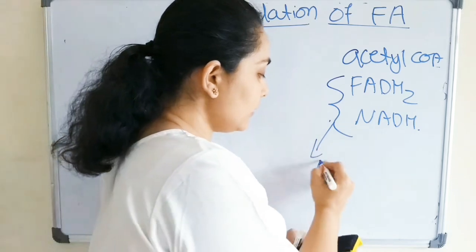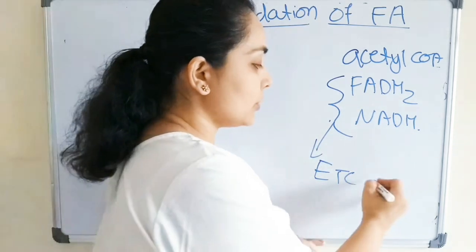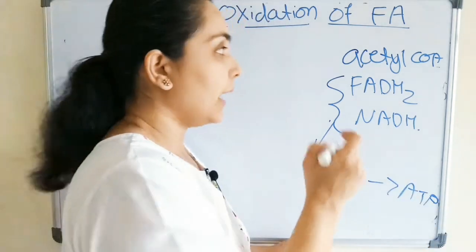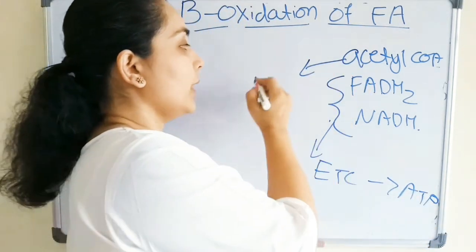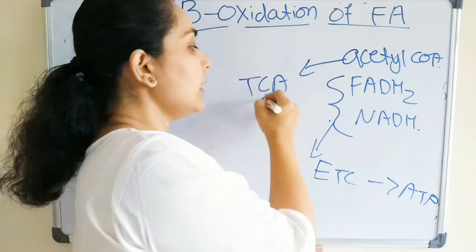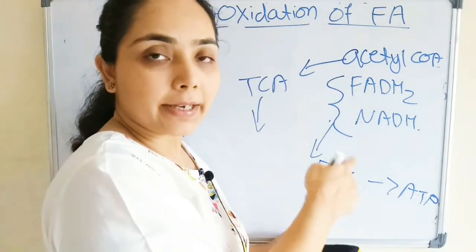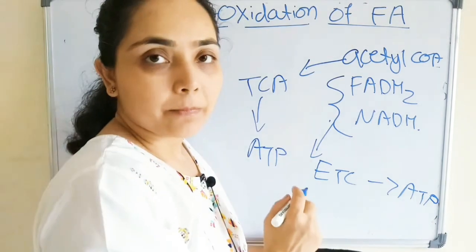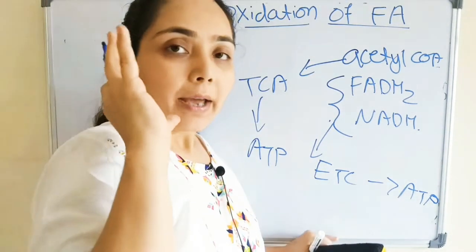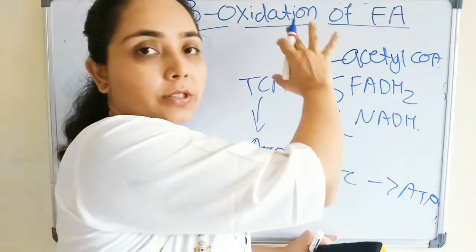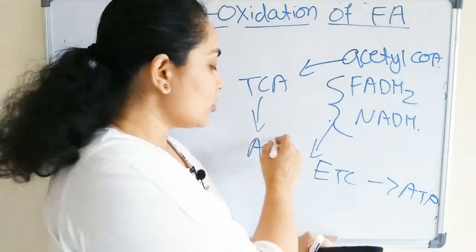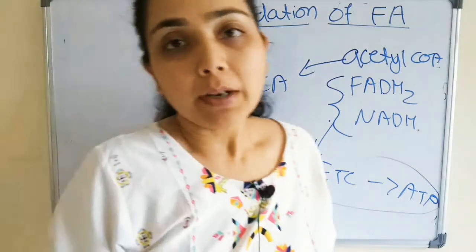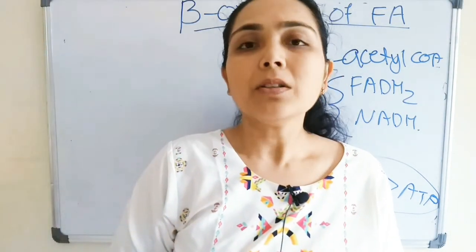The FADH2 and NADH generated here will enter the electron transport chain and generate ATP, and this acetyl-CoA will then enter the TCA cycle, where we will also get NADH and FADH2, and finally we will get ATP. So the main purpose of oxidation of fatty acid is to generate energy.